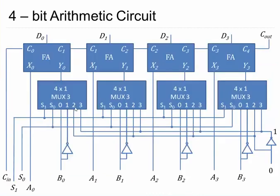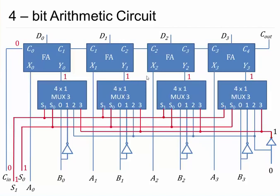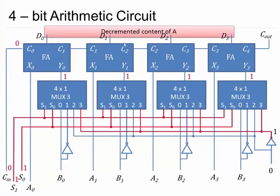Since Y must be all 1s, we need line 3 of the multiplexer to be selected, because line 3 provides input value 1. To select line 3, we set S1=1 and S0=1, and Cin = 0. With S1 and S0 both 1, the multiplexer output Y = 1 for all four bits, and with Cin = 0 the full adder output gives the decrement operation — the content of A is decremented by 1.